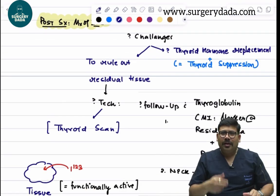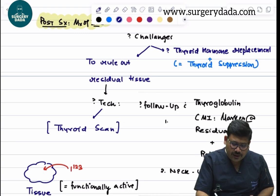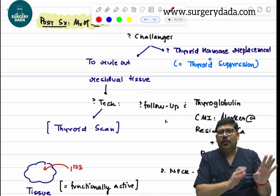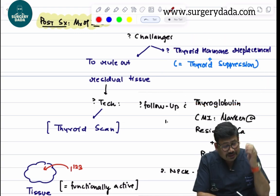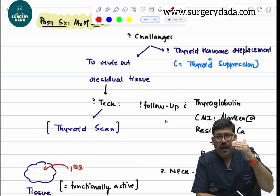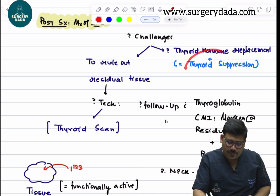There are two challenges post-total thyroidectomy: I need to replace the thyroid hormone which is required by the body, but at the same time I have to keep that thyroid gland under suppression.